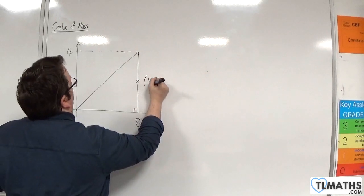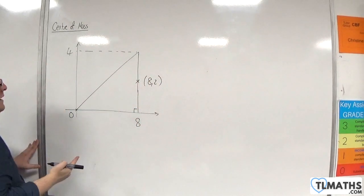The midpoint here would be 8, 2, so that's the coordinates of the midpoint of that line.